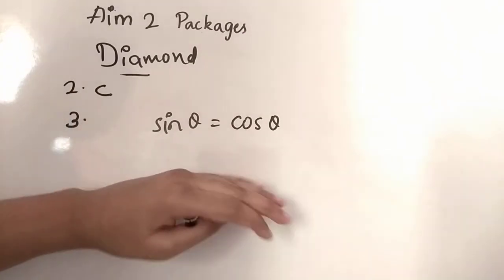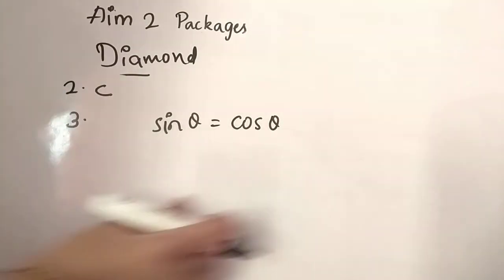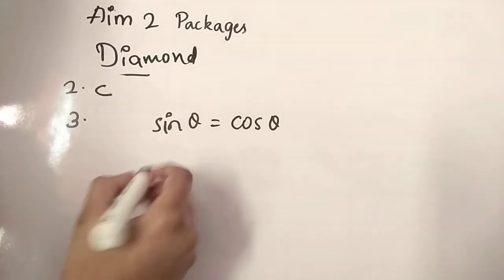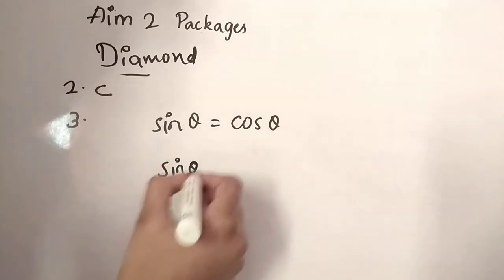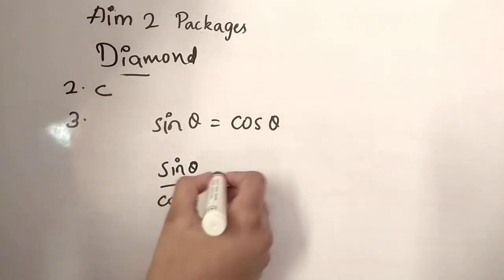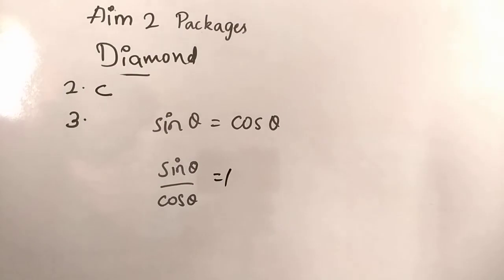Sin theta is equal to cos theta. Now, if I send this cos theta here, it will become sin theta divided by cos theta. It is 1. Right? Fine.